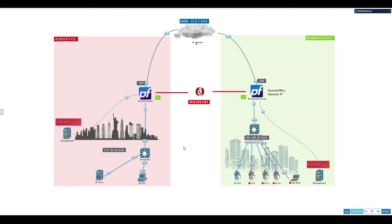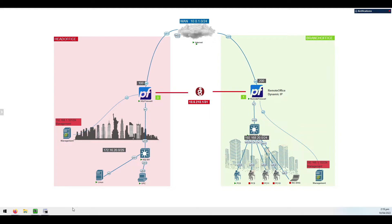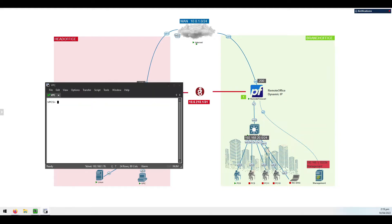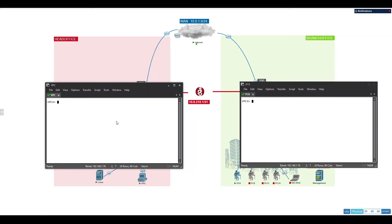Hello everyone, this is Mapder once again with another video. Today I'm going to show you how to configure site-to-site VPN on pfSense. On the diagram, you can see on my left side is the head office and on my right side is the branch office. Both are connected to the internet with a static WAN IP address. The LAN on head office is 172.16.10.0/24 and the LAN on branch office is 192.168.20.0/24.